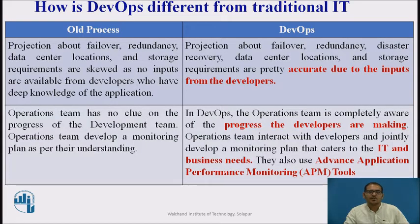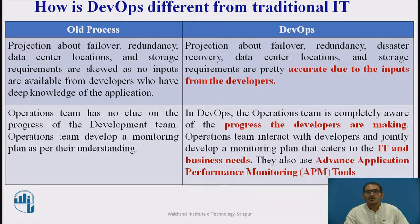In the old process, projections about failover, redundancy, data center allocation, and storage requirements are skewed because no inputs are available from developers who have deep knowledge of the application. In DevOps, projections about failover, redundancy, disaster recovery, data center locations, and storage requirements are accurate due to inputs from the developers.